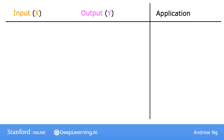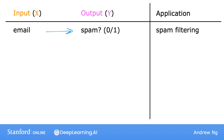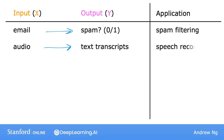Let's look at some examples. If the input x is an email and the output y is whether this email is spam or not spam, this gives you your spam filter. Or if the input is an audio clip and the algorithm's job is to output the text transcript, then this is speech recognition.